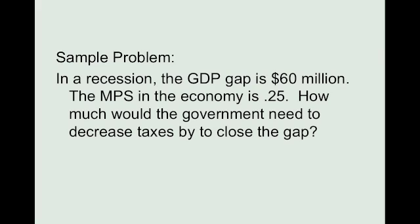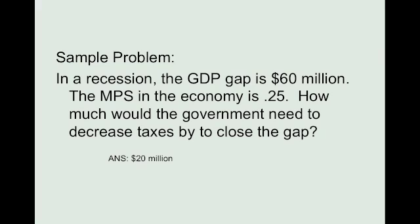Here's a sample problem — pause the video now to figure it out. The answer is $20 million. The spending multiplier in this economy equals 1 over MPS, so 1 over 0.25 equals 4. The tax multiplier then is 4 minus 1, which equals 3. You take the desired change in GDP of $60 million, put that into the formula where it says change in GDP, and put in the tax multiplier of 3, giving you: the unknown times 3 equals 60.